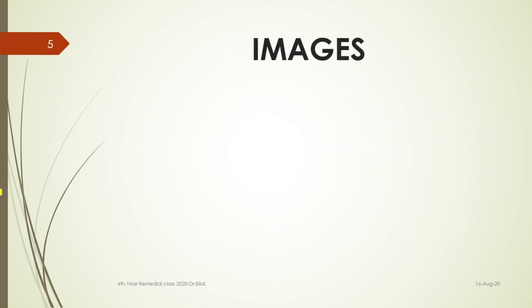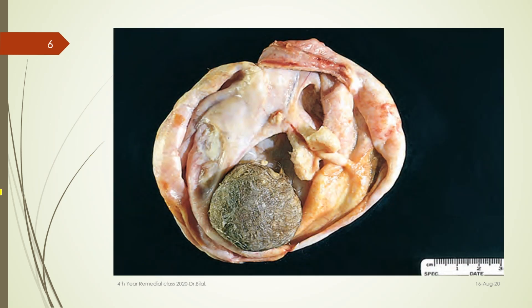Moving on to the gross picture of one example — if somebody gives you an ovarian tumor picture where hairs are visible, those visible hairs tell you that it's a mature cystic teratoma. You can see it's a cystic tissue which has been emptied and there is a ball of hair visible, so you know that it's a gross picture of a mature cystic teratoma.